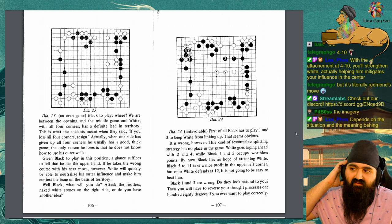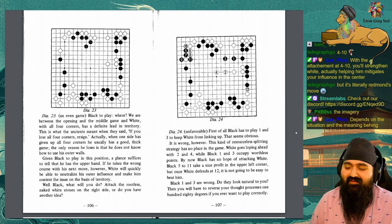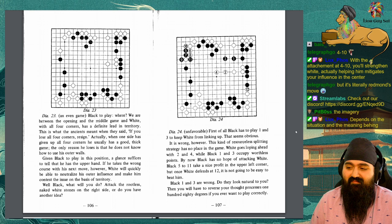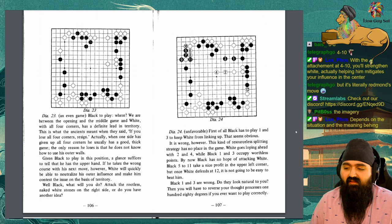Diagram 23. An even game. Black to play. Where? We are between the opening and the middle game, and white, with all four corners, has a definite lead in territory. This is what the ancients mean when they said, if you lose all four corners, resign. Actually, when one side has given up all four corners, he usually has a good, thick game. The only reason he loses is that he does not know how to use his outer walls.